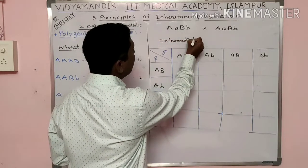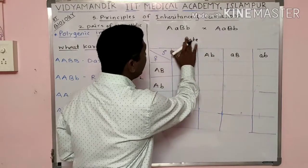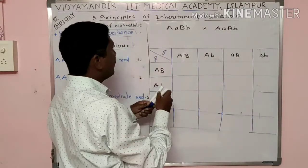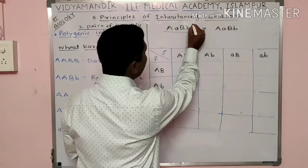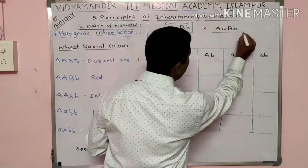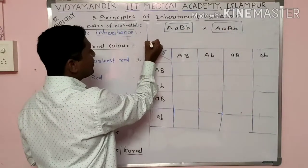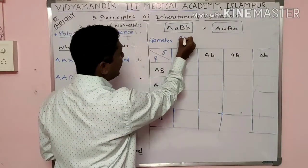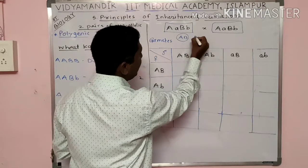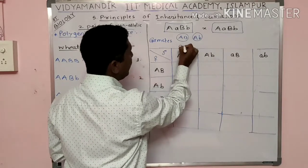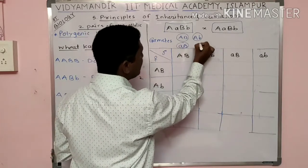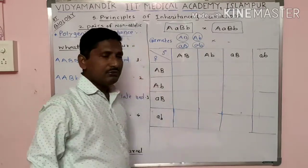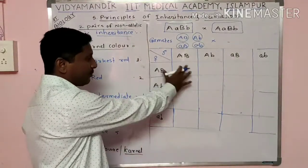When we cross intermediate red colored kernels with intermediate red, the gametes produced are: capital A capital B, capital A small b, small a capital B, and small a small b. Using a Punnett square with these same gametes on both sides, we get the F2 combinations.